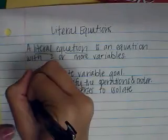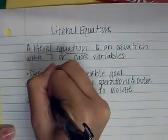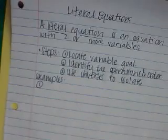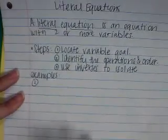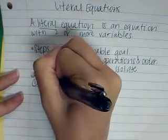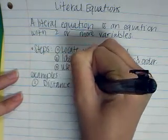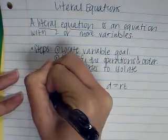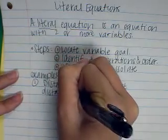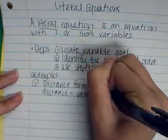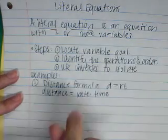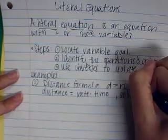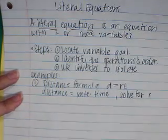Let's look at what that looks like in practice. Some examples. Number one. The distance formula is D equals RT, where D stands for distance, R stands for rate, and T stands for time. So, R times T is rate times time. We want to solve for R or for the rate.